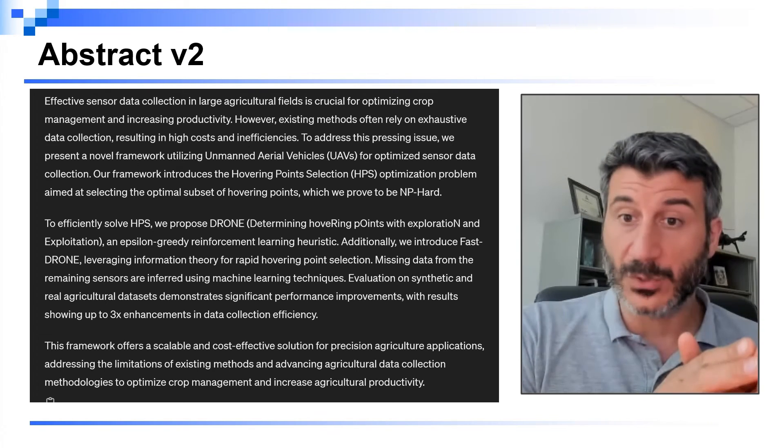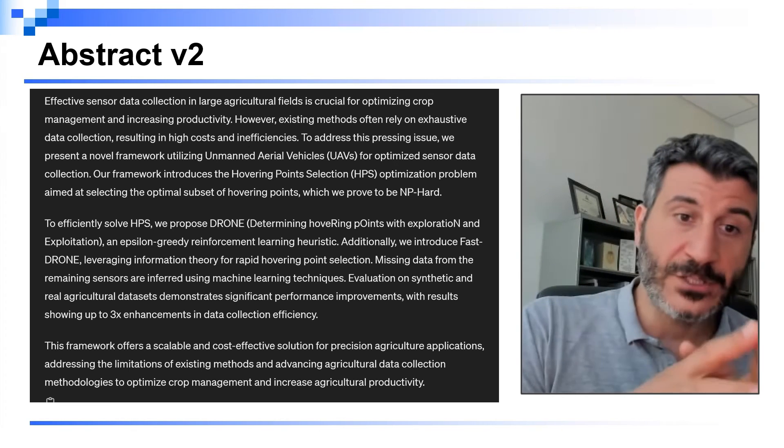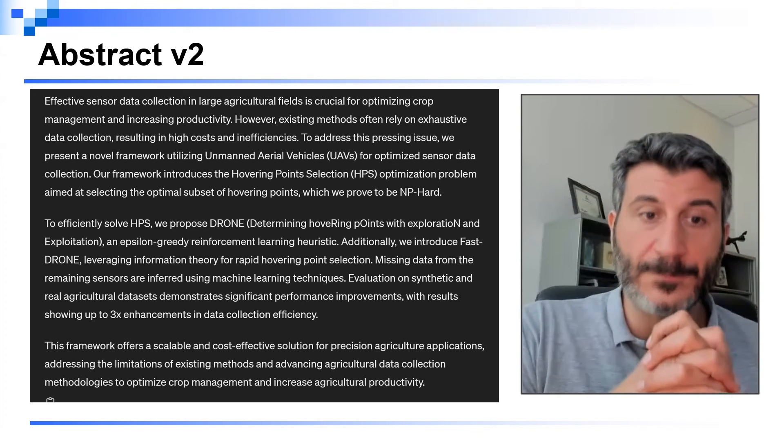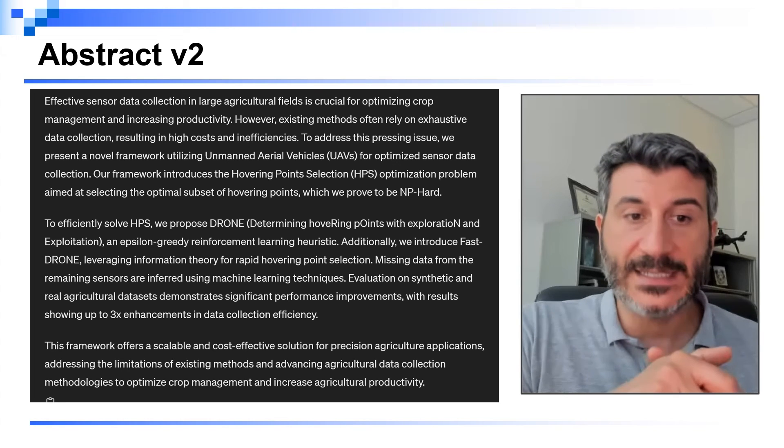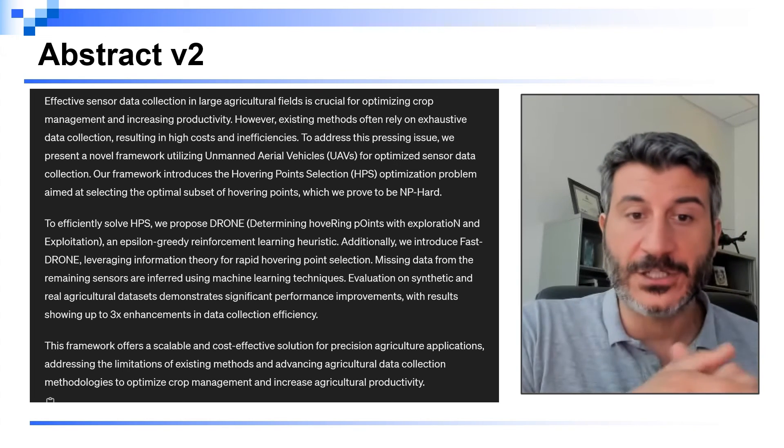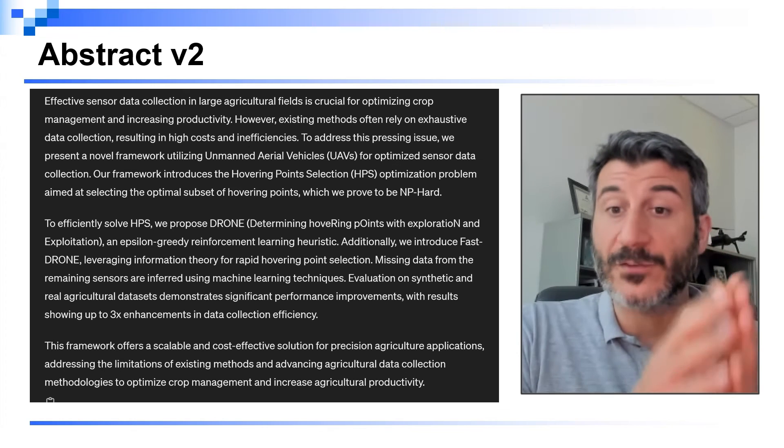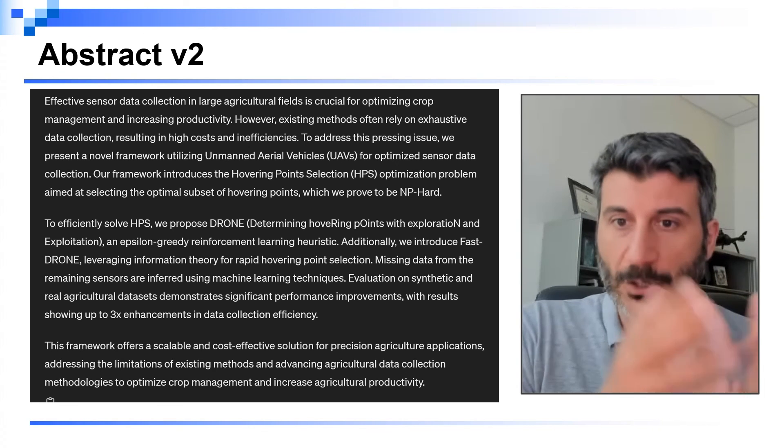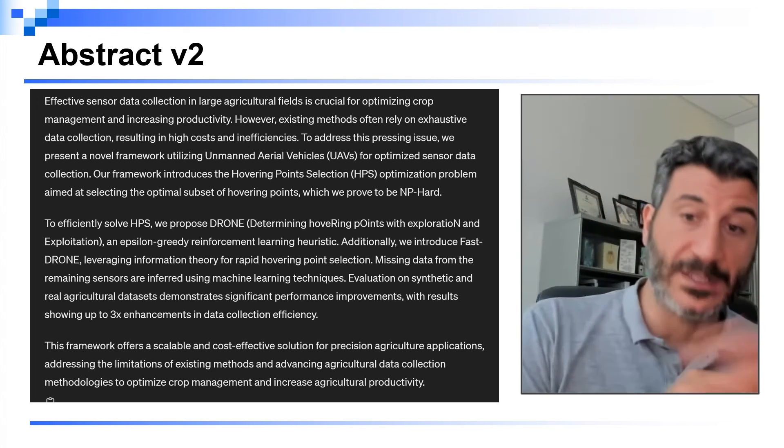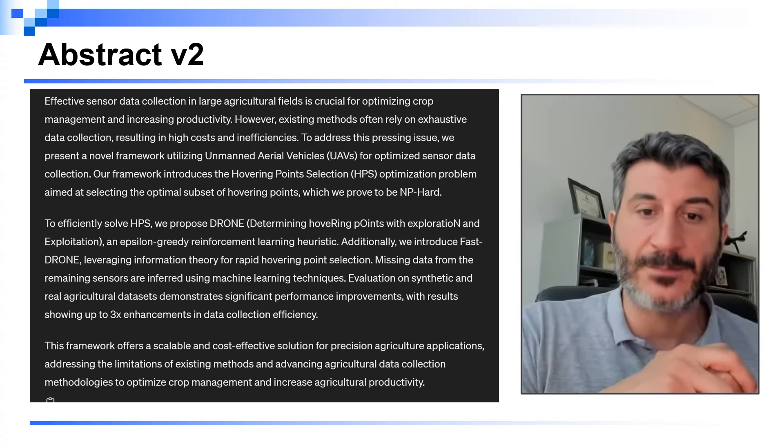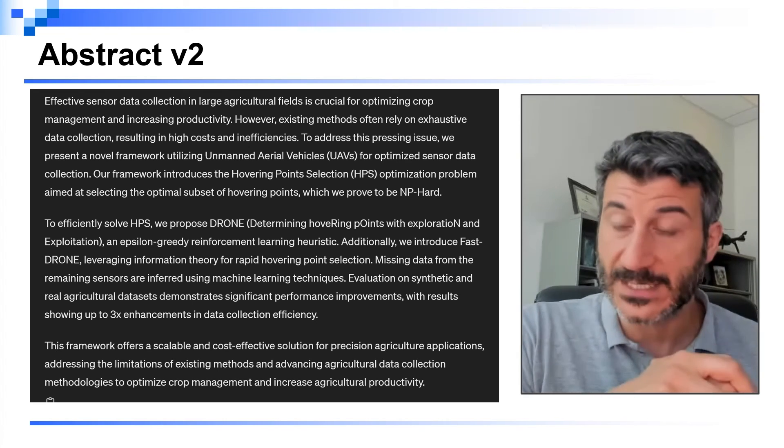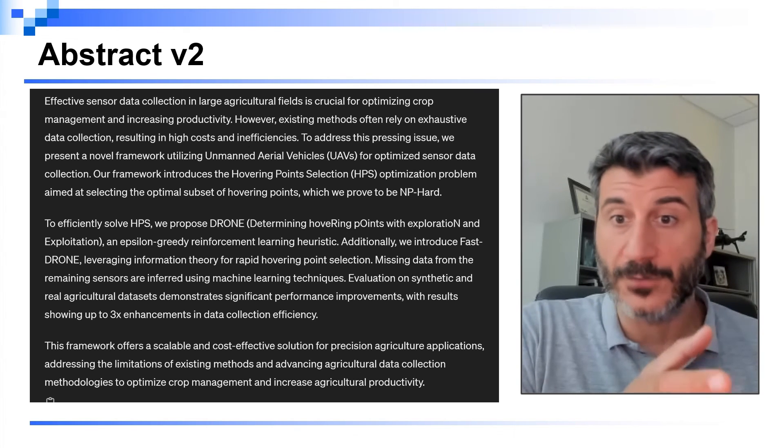To efficiently solve HPS, we propose Drone, an epsilon-greedy reinforcement learning heuristic. Additionally, we introduce Fast Drone, leveraging information theory for rapid hovering point selection. Missing data from the remaining sensors are inferred using machine learning techniques. Here we have completed the technical part of the paper. And now we can move to the results. Evaluations on synthetic and real agricultural data sets demonstrate significant performance improvements with results showing up to 3x enhancement in data collection efficiency. And here we have covered all the important components of the abstract.